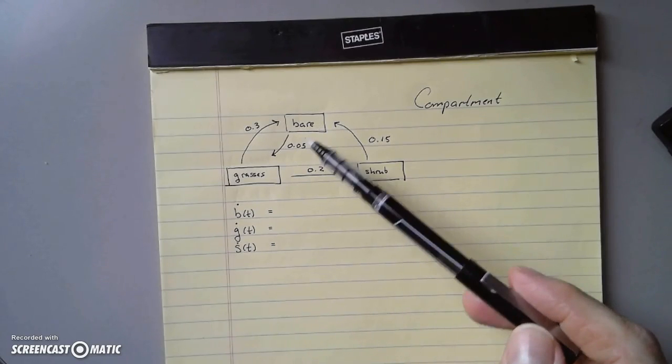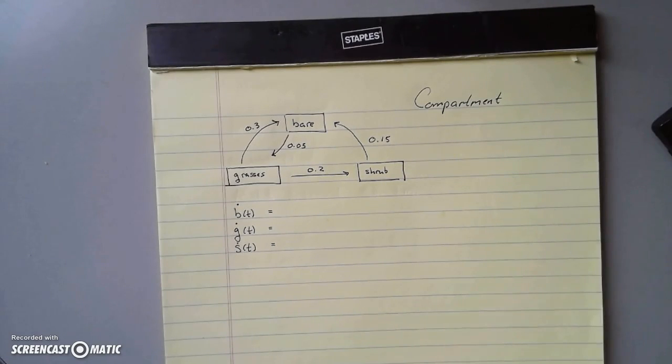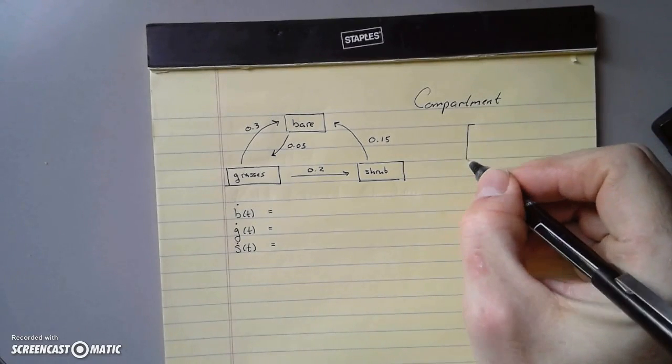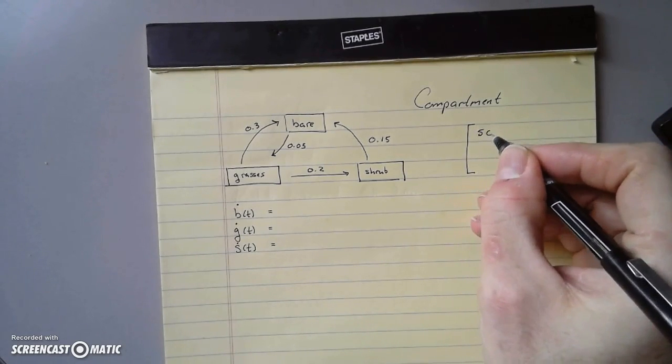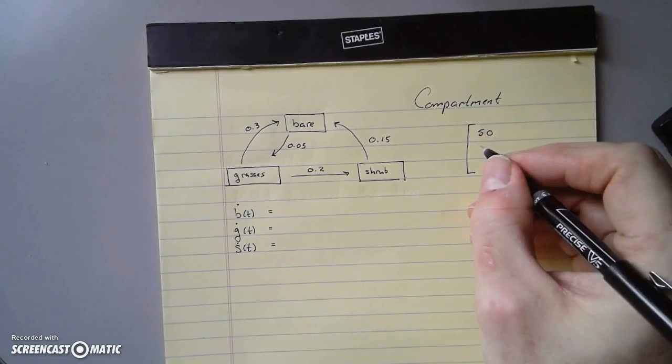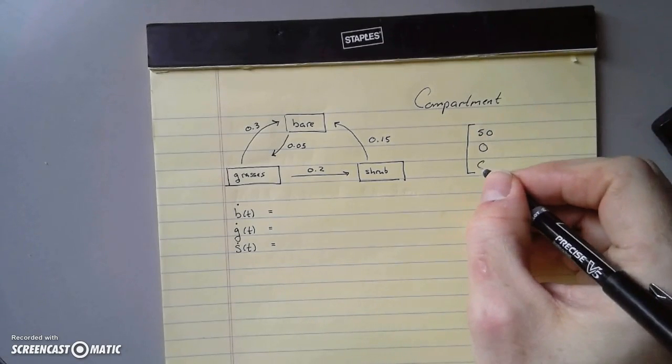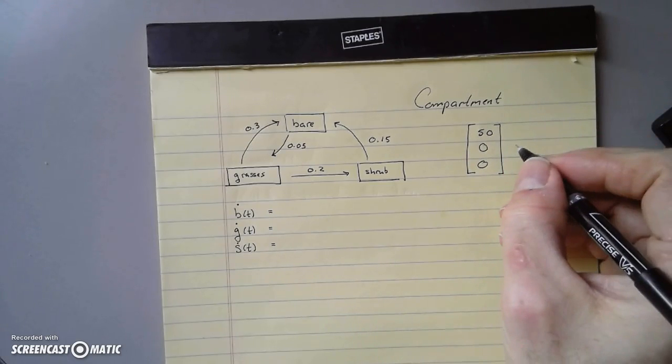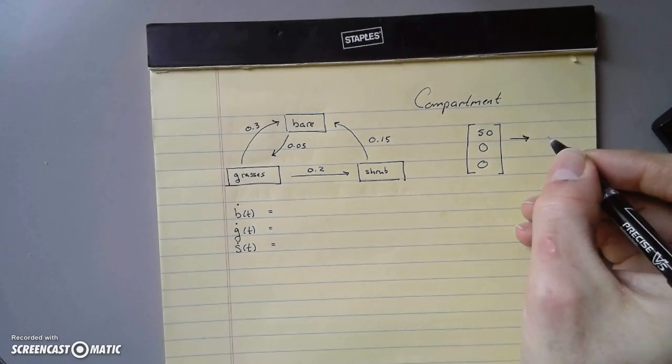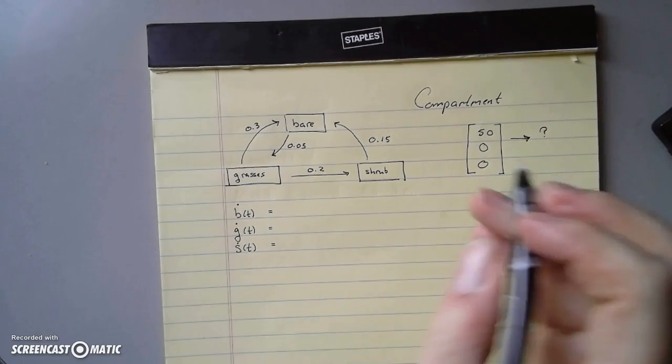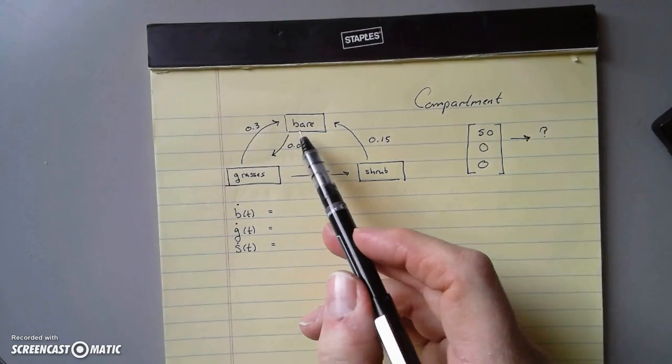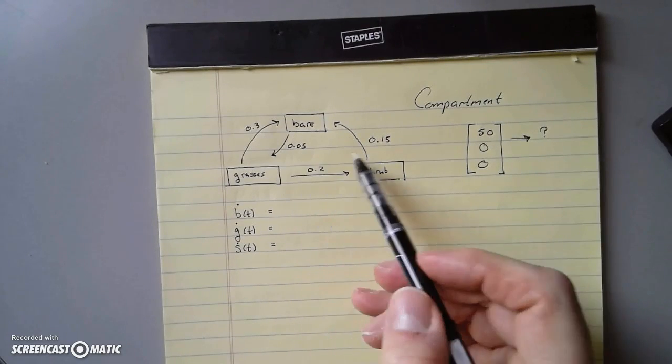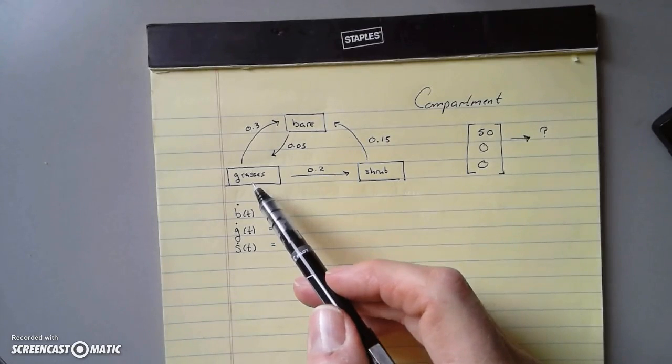The three compartments are bare ground, grassy ground, and shrub ground. You have some initial condition - maybe 50 acres of bare ground, zero acres of grass, zero acres of shrubs. This is the initial setup and it's going to evolve somehow.